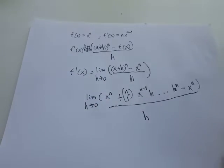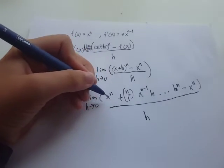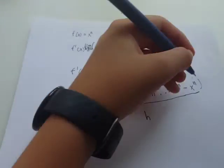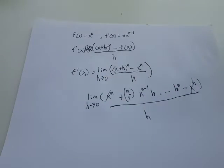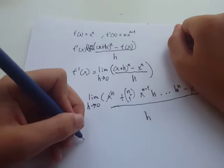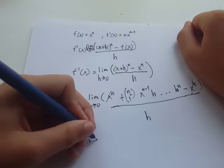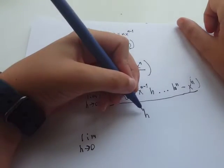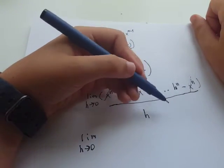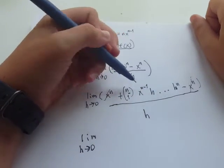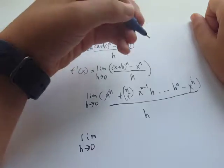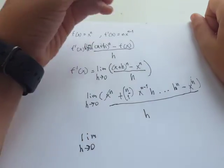So next step, these two will cancel because positive and negative. It becomes limit as h approaches 0, and also this h divides all these h's on top, so it becomes h to the n minus 1, and here it disappears.